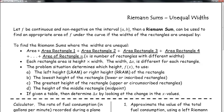All right, so now let's suppose that we have, what if my rectangles were not equal? Let f be a continuous function, also non-negative on the interval between a to b. Then a Riemann sum can be used to find the approximate area of f under the curve if the widths are unequal.